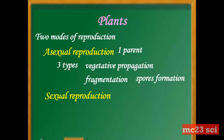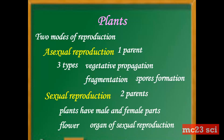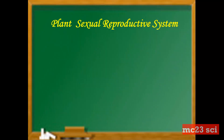In sexual reproduction, it needs two parents. The plants have male and female parts, and the flower is the organ of sexual reproduction. The plant's sexual reproductive system involves the male and the female reproductive organs.